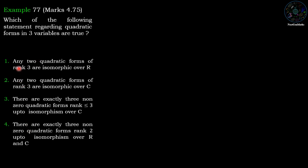Option 1: Any two quadratic forms of rank 3 are isomorphic over R. Option 2: Any two quadratic forms of rank 3 are isomorphic over C.